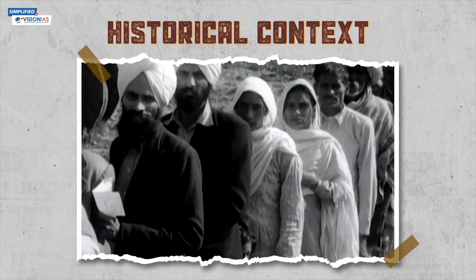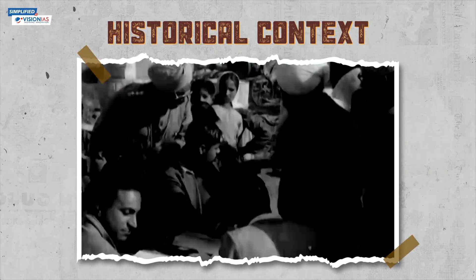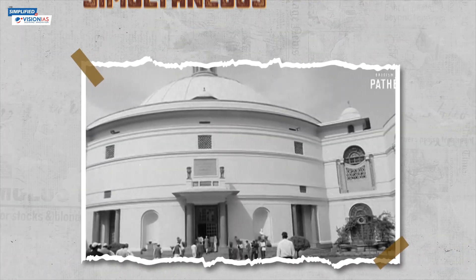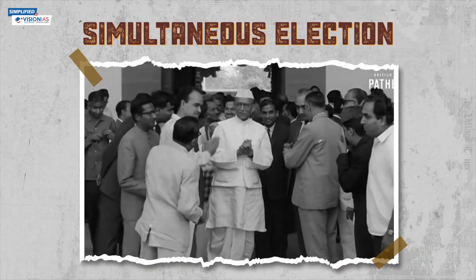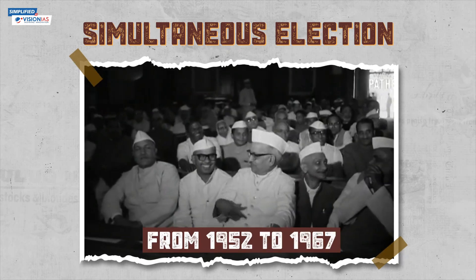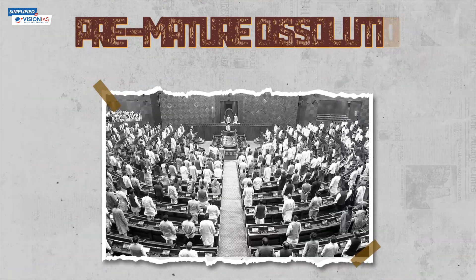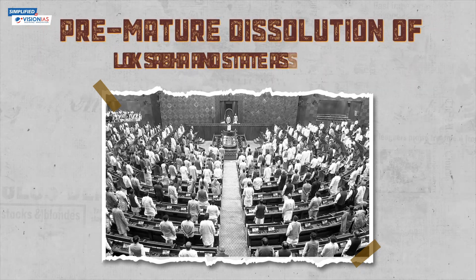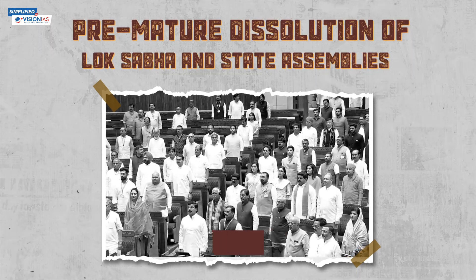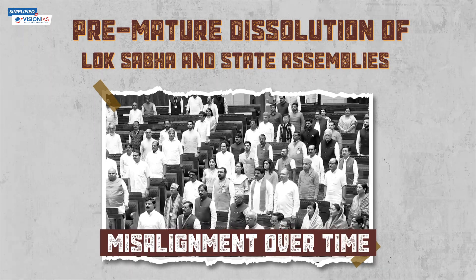Simultaneous elections have been part of India's history. In fact, after independence, this is how elections were done in India. The first four elections to the parliament and state assemblies were held together from 1952 to 1967. But in the late 1960s, due to the possibility of early dissolution of Lok Sabha and state assemblies, the national and state elections got misaligned.